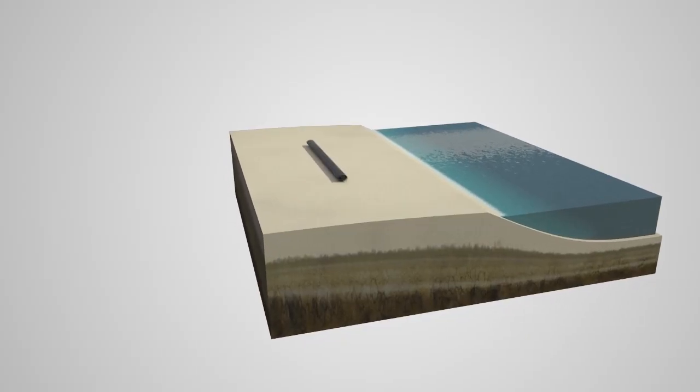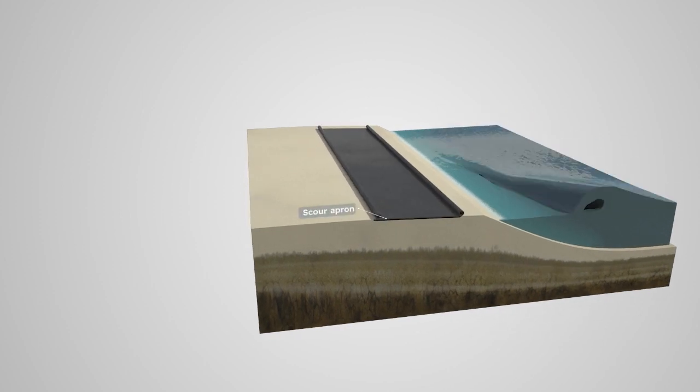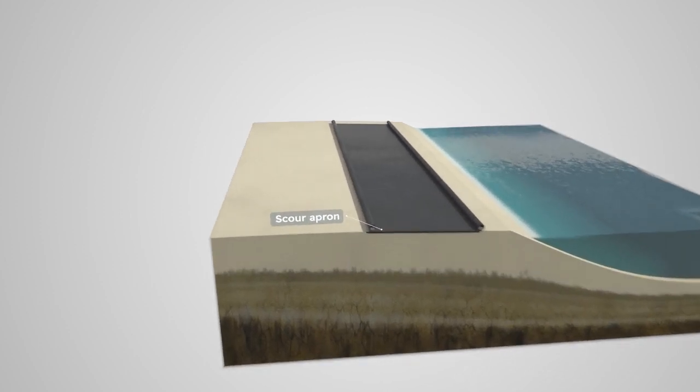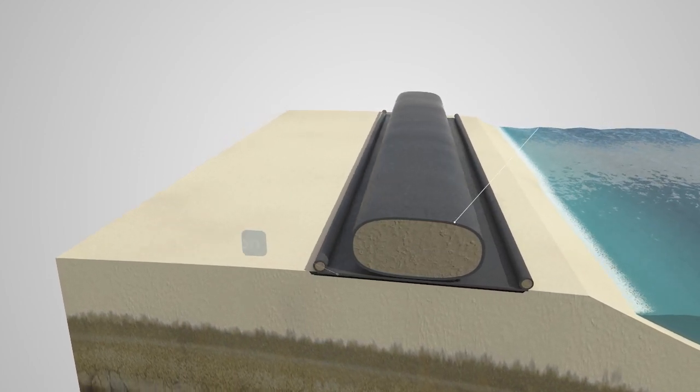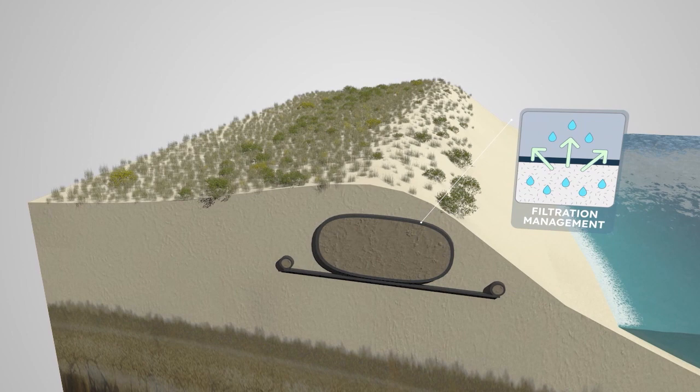During hurricanes and storms, Geotube systems hold the sand and soil of coastlines into place, preventing erosion and property damage. Even original beach profiles can be recreated.